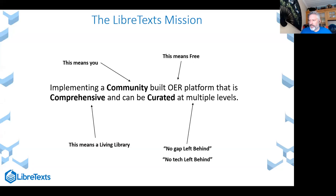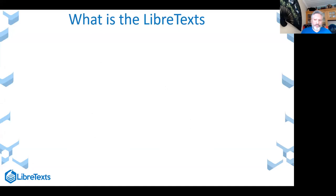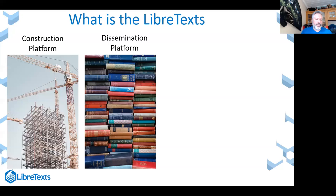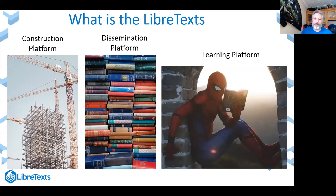The platform is a living library — the opposite of a dead library. A repository of PDFs or just links would be an example of a dead repository. It's important to be able to curate content because OER content, like all academic content, starts to age, and we need a mechanism to address that. The LibreText project is a construction platform that provides the opportunity to build OER content. We are also a dissemination platform — I'd argue we're the most popular dissemination platform on the net today. And we're a learning platform, a mechanism for students to capitalize on our content to learn effectively and for faculty to utilize.